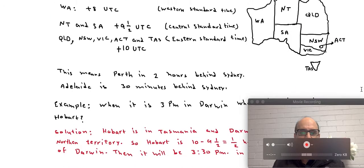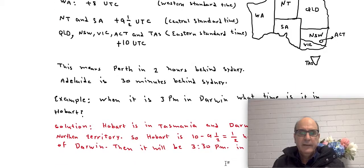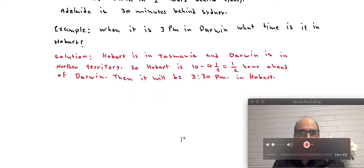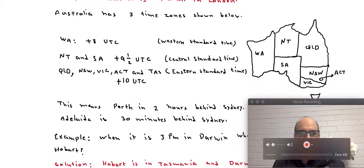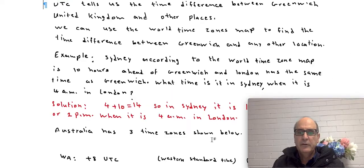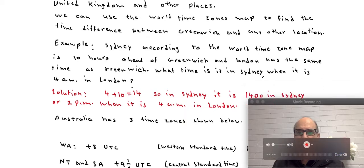If we want to have an example on that, it is an example like this. When it is 3 p.m. in Darwin, what time is it in Hobart? So 3 p.m. in Darwin, what time is it in Hobart?